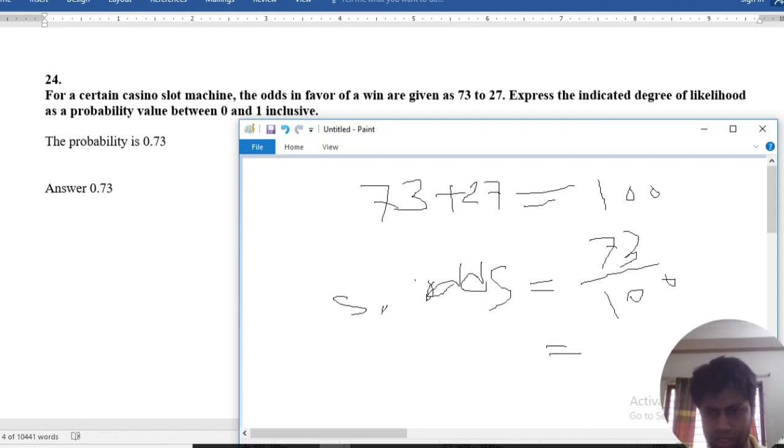So our result is 0.73, okay? We get our desired result. Our desired result is 0.73.